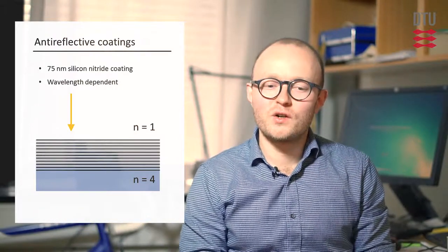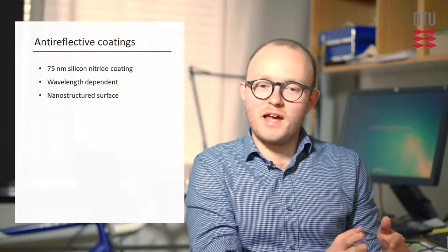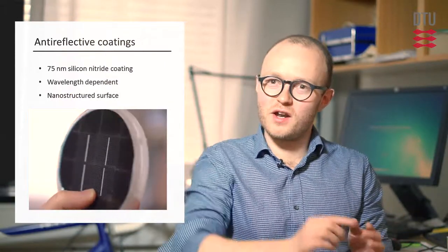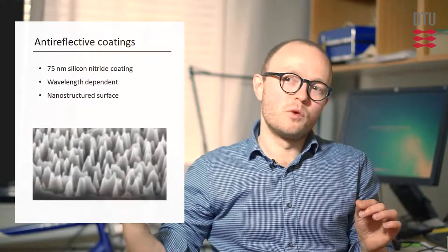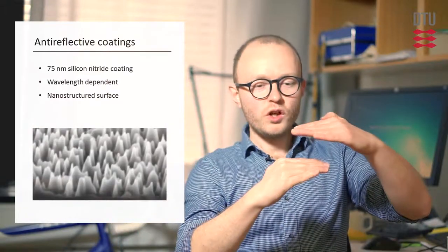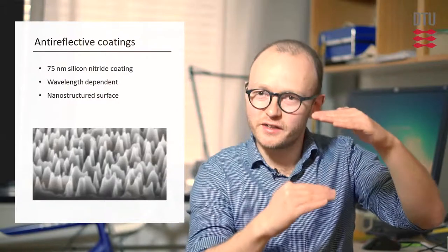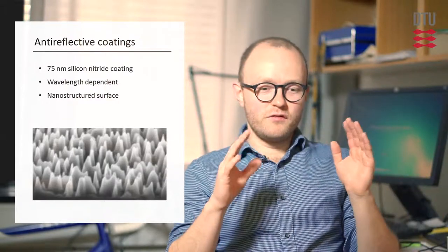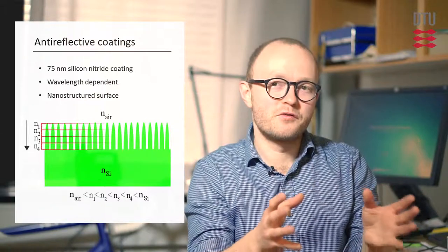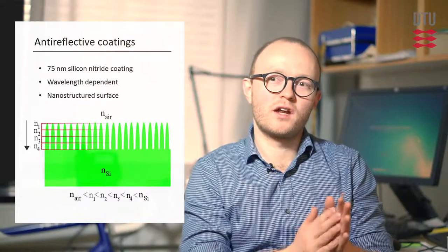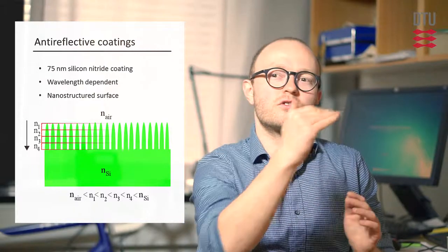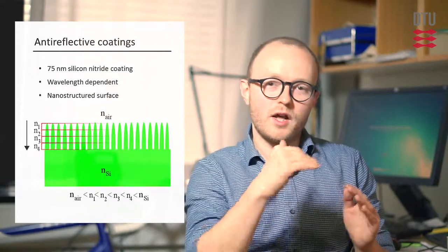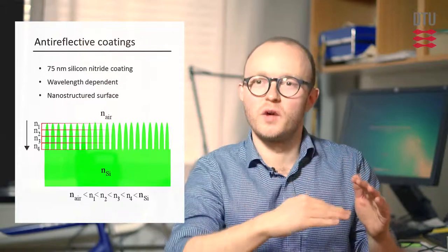And actually, it's kind of what we want to do with our black silicon nanostructures. Because if you nanostructure the silicon surface, what you do is basically you nanostructure the interface between air and silicon. And if you model that from a refractive index perspective, you get a gradual increase in refractive index going from that of air to that of silicon. So not in an abrupt way, but in a gradual way.